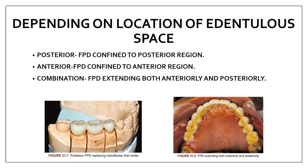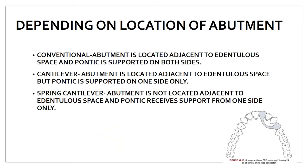The next is depending on the location of the denture space — whether it is posterior, anterior, or a combination. Posterior is confined to the posterior region, for example where the mandibular first molar is missing, with retainers and a pontic. Anterior is when the FPD is confined to the anterior region. Combination is when it extends both anteriorly and posteriorly.